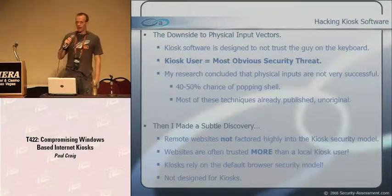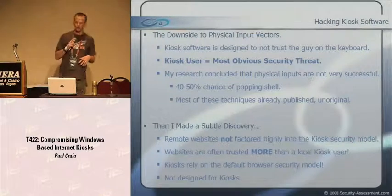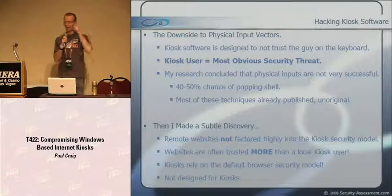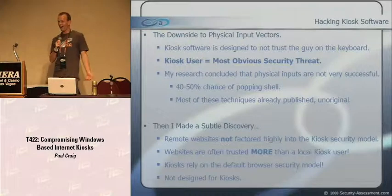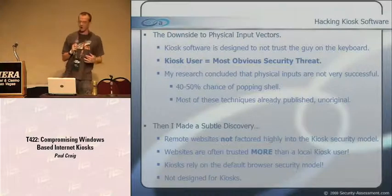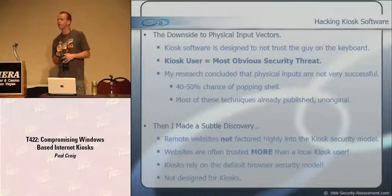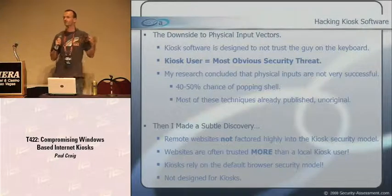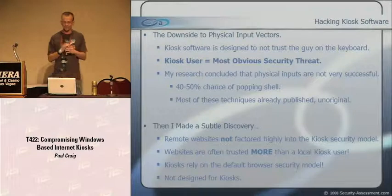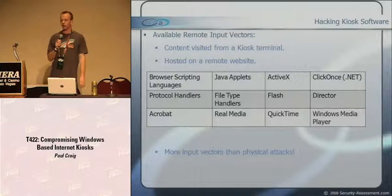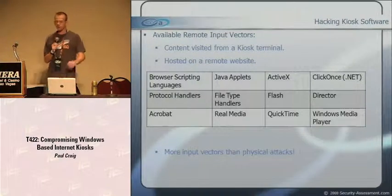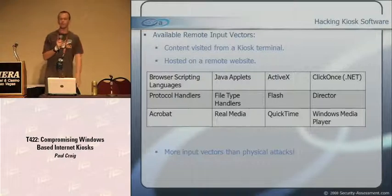I made a really subtle discovery during my research: remote websites are not factored into the kiosk security model. Websites are actually trusted more than the dude on the kiosk. This is because kiosks rely on the default browser security model - none of the kiosk vendors have actually taken into account a potential malicious website. So what available remote input vectors do we have? Content visited from a kiosk terminal, hosted on a remote website.